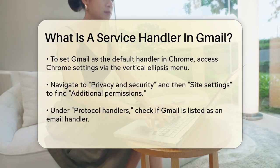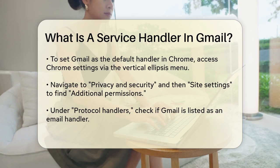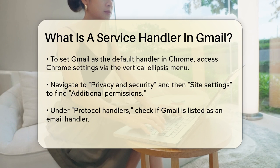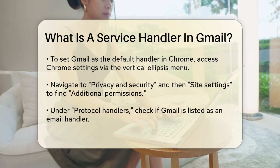If you have, clicking on that link will open a new email in Gmail directly within your browser. To set Gmail as the default email handler in Chrome, you need to go to your Chrome settings. Click on the vertical ellipsis to open the menu, select Settings, then navigate to Privacy and Security, and choose Site Settings. From there, find Additional Permissions and select Protocol Handlers.